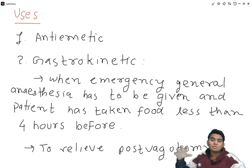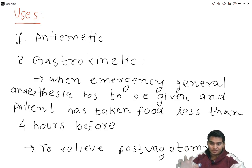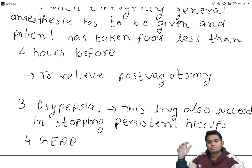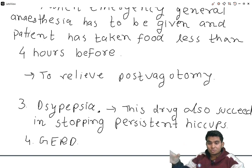Uses of metoclopramide include use as an anti-emetic and gastrokinetic agent. When emergency general anesthesia has to be given and the patient has eaten less than four hours before, metoclopramide is used to empty the stomach. It is also used to relieve post-vagotomy dyspepsia, to stop persistent hiccups, and in GERD, though nowadays a proton pump inhibitor is preferred.